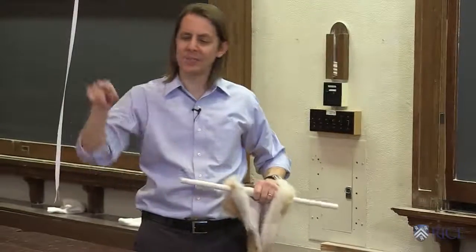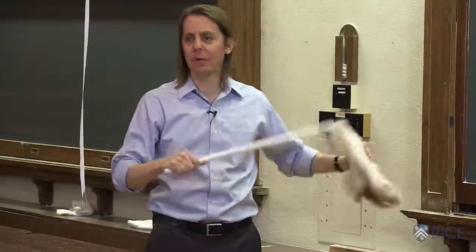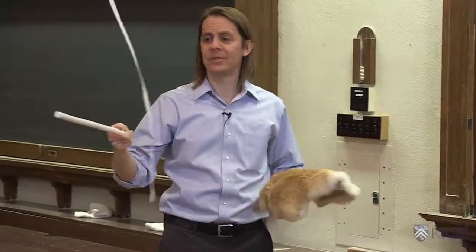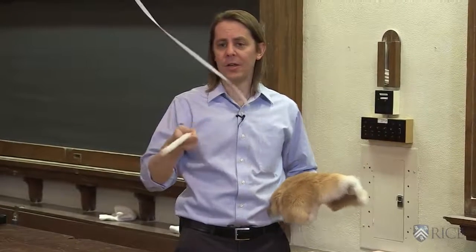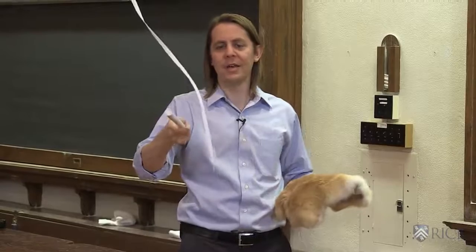So I just made the teflon negative by rubbing it with fur. I'll make this teflon rod negative by rubbing it with fur. And then if I try to make them touch, there's just no way they're going to touch, right? Huge repulsive force between the like charges—negative and negative, they don't want to touch each other.